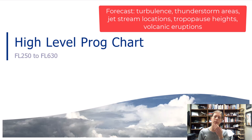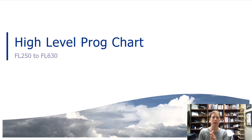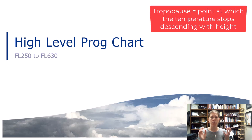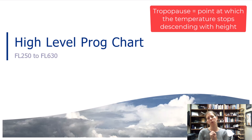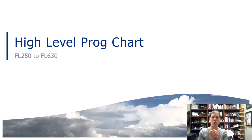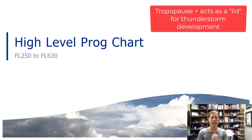Thinking back to when we've been talking about the atmosphere and thunderstorm development, why do we care about tropopause heights? If you remember, that really acts like a lid on thunderstorm development. Knowing the tropopause heights can help us know what altitude to fly at to go over top of thunderstorms if it's possible as they develop, since it acts like a lid on thunderstorm development.